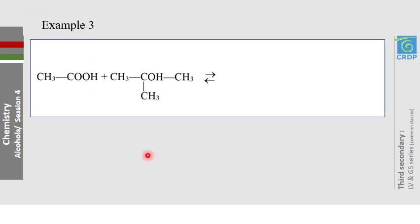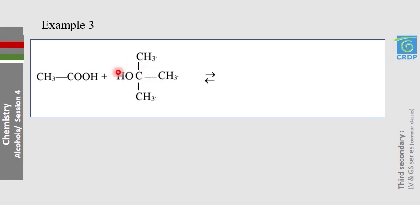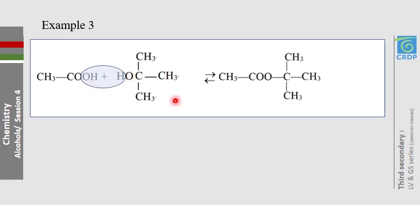Application number 3 involves a tertiary alcohol: 2-methyl-2-propanol. After some rearrangements — it is still 2-methyl-2-propanol — it is easier to draw it in the rearranged form. Then H₂O is produced and the two remaining parts are connected together to form the ester.